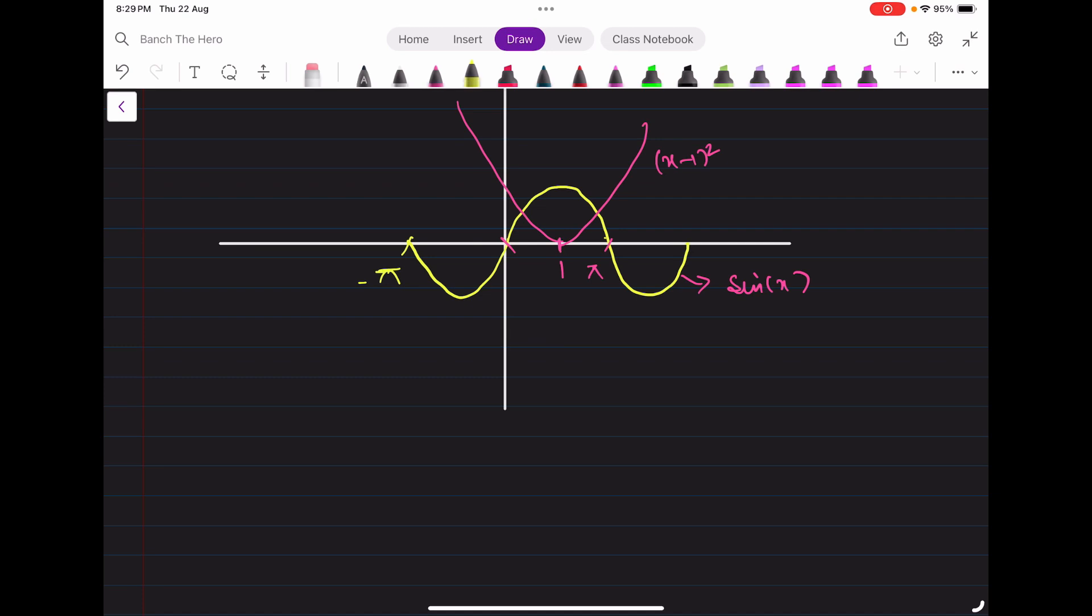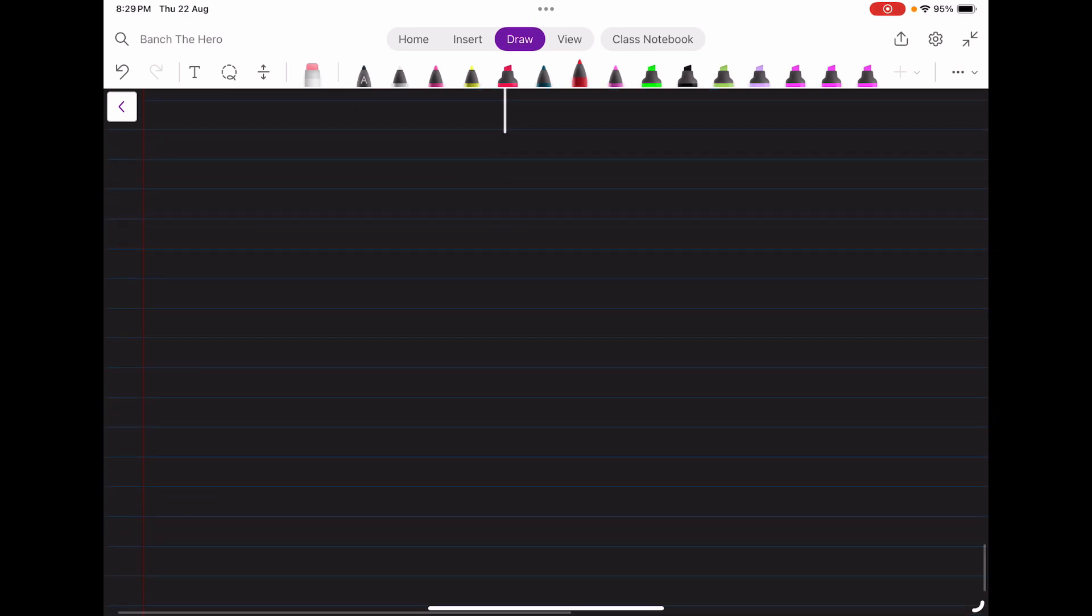This is the graph of (x - 1)². This is the graph of sin(x) between -π to π. Clearly from this graph we can see how many points of intersection there are. This is the first point of intersection, this is another point. Point of intersection is equal to 2. So the answer comes out to be 2.